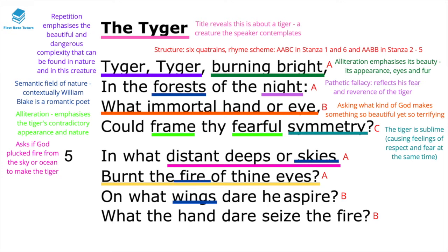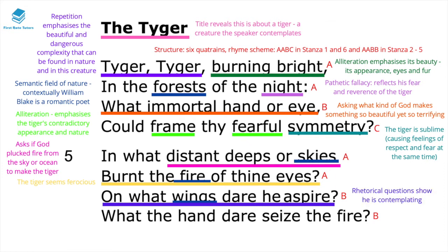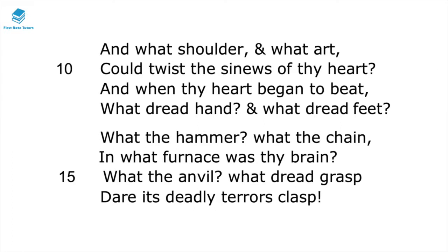He continues: 'burnt the fire of thine eyes' — the mention of fire inside the tiger's eyes reveals the tiger as really ferocious. 'On what wings dare he aspire?' — the rhetorical question shows how he's contemplating how such a creature can be in existence, coexisting in nature with very meek animals like lambs. The repetition of the word 'fire' shows that the tiger is really vicious, adding to its ferocity.